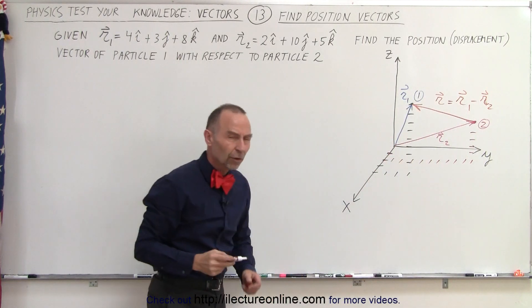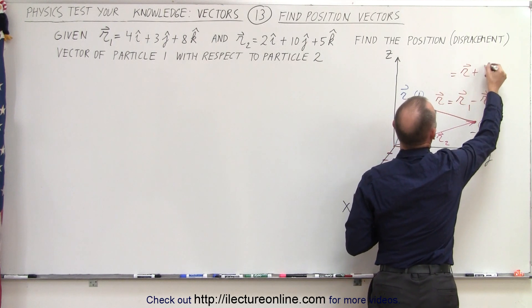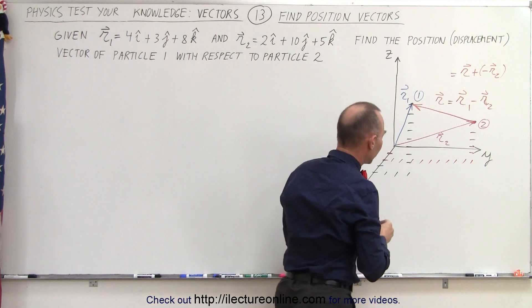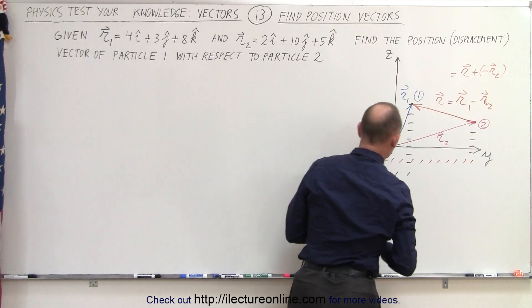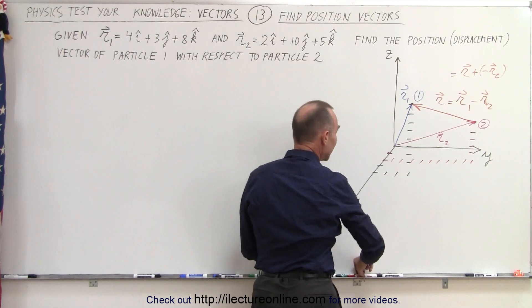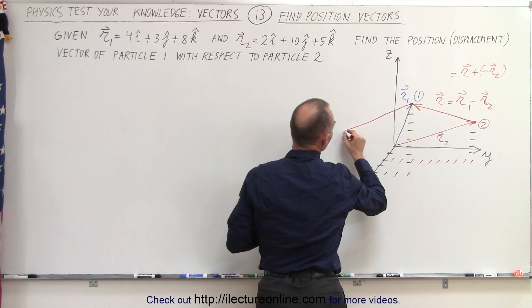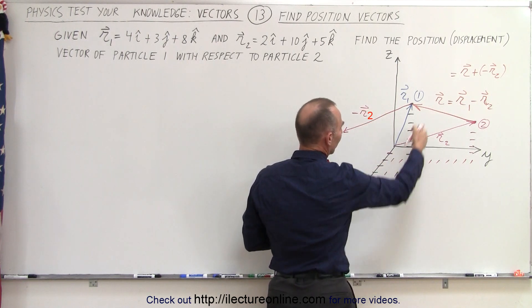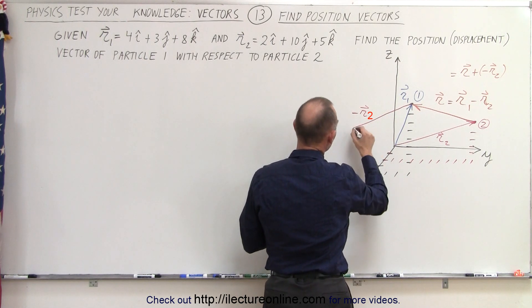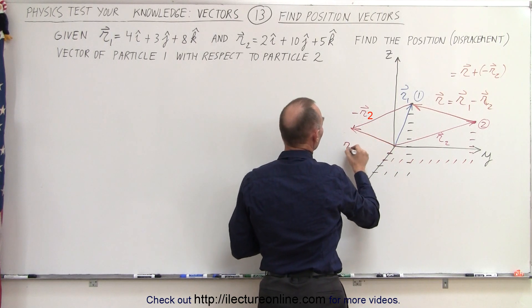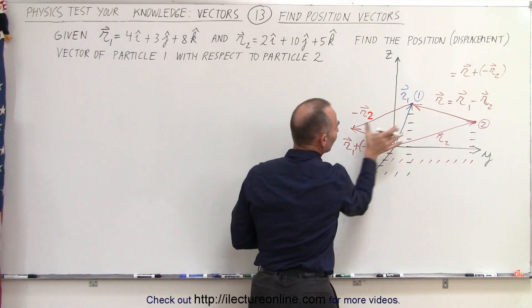Remember that when we subtract vectors, that is the same as adding the negative — that would be R1 plus a negative R2. So let's find the negative R2 and add that to vector R1. Here is R2, and the negative R2 added to R1 would look like this — this would be the negative of R2. So we have vector R1 added to the negative R2, and notice we get the very same vector result.